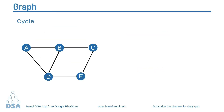The next term is cycle. A cycle is also a path in which the first and last node are the same, but all other nodes must be distinct. It is similar to a closed path, except that in a cycle only the start and end node are the same and all other nodes must be distinct. This is called a simple cycle.